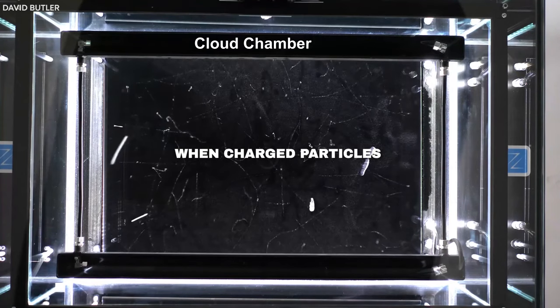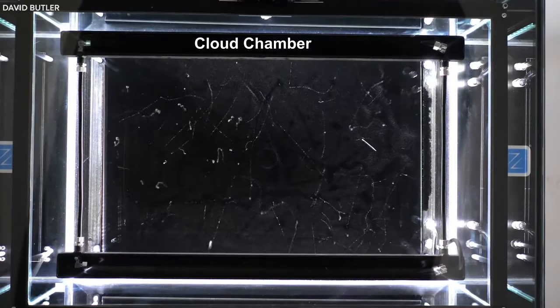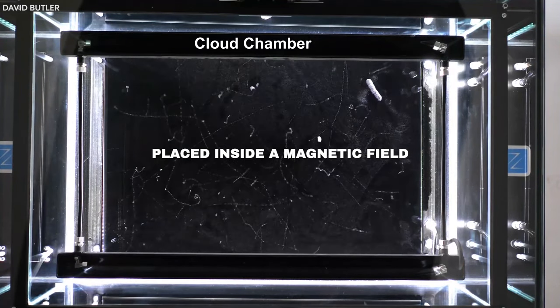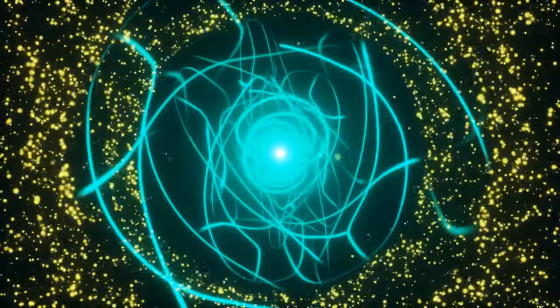Here's what it looks like when charged particles pass through a cloud chamber. The chamber contains a vapor of alcohol placed inside a magnetic field. Anderson concluded that this track was produced by a particle with the same mass as an electron, but with a positive charge.